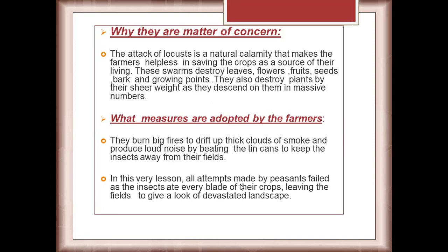In this story, all attempts made by the peasants failed, as the insects ate every blade of their crops, leaving the fields looking like a devastated landscape. The locusts come in swarms, eating each and every leaf of the crops, and what remains behind is a scene of utter destruction — the lands present a picture of devastated, ruined fields.